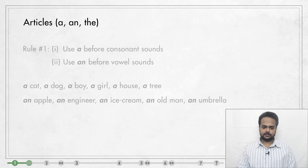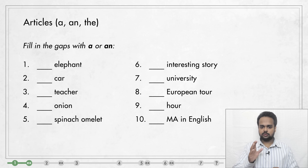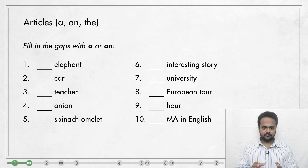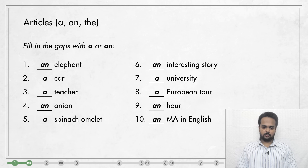Let's do a small exercise. You see ten items on the screen. For each one, I want you to say if you would use A or AN before it. Stop the video, think about it, then play the video again and check. OK, here are the answers. Did you get them all right?